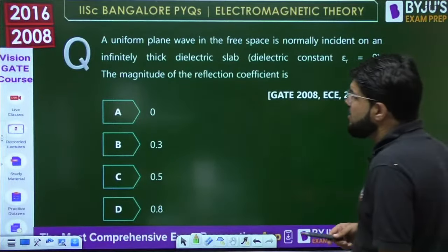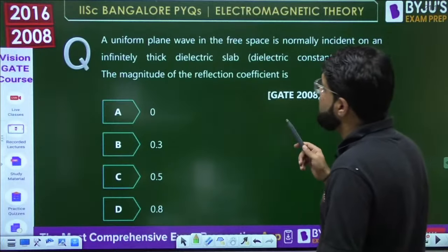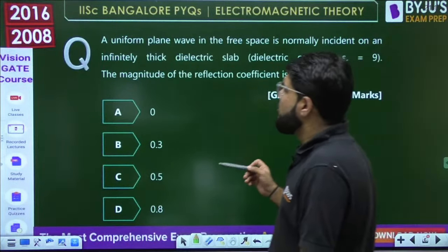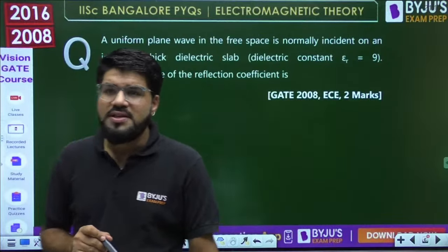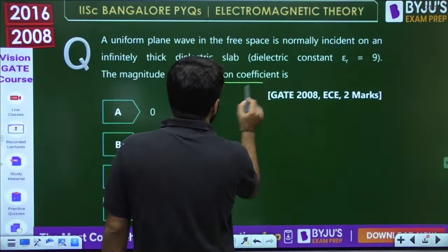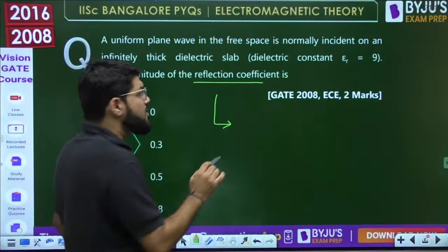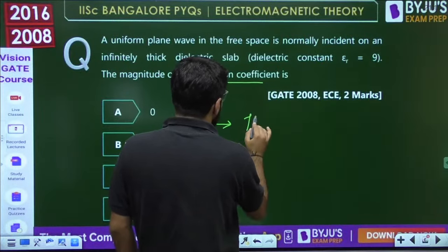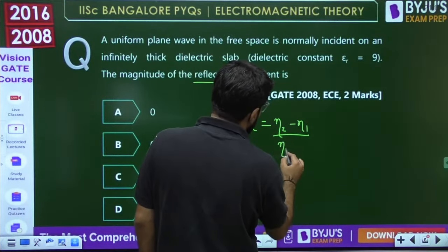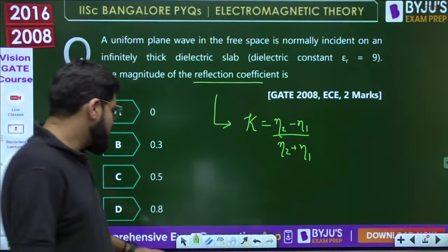Let's get started with the first question. A uniform plane wave in free space is normally incident on an infinitely thick dielectric slab. What is the magnitude of the reflection coefficient? This is a 2008 EC 2-mark question. The reflection coefficient is given by the formula (η₂ − η₁) / (η₂ + η₁), where η represents the intrinsic impedance of the medium.